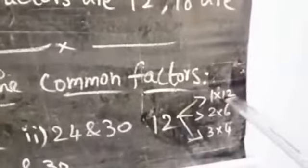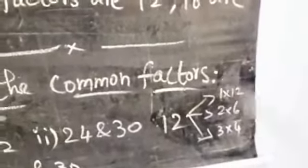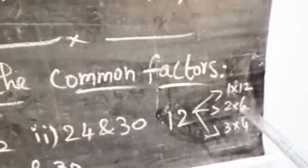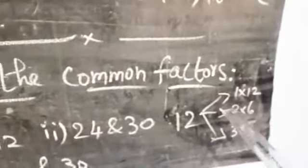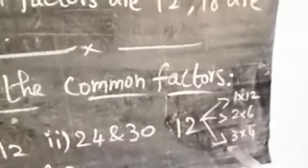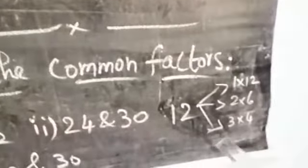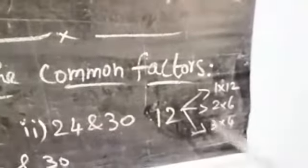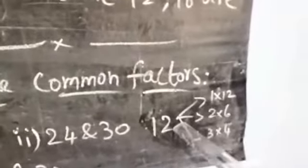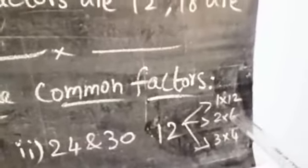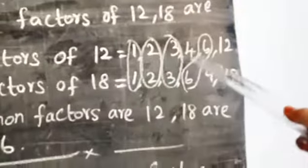So the factors of 12 are: one, two, three, four, six, twelve.